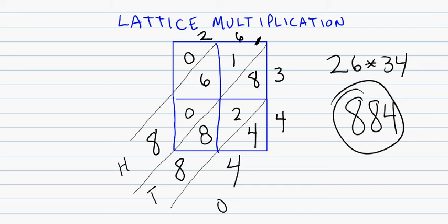And then you just have to make sure everything gets written in the right way, and the columns get added together. And that's lattice multiplication with 2 digit times 2 digit.